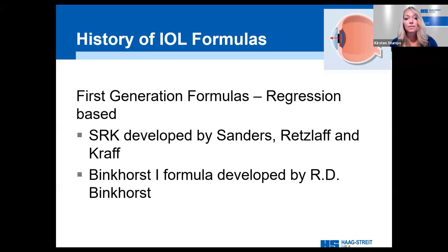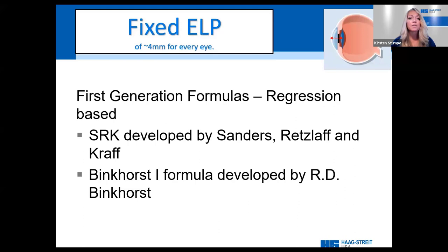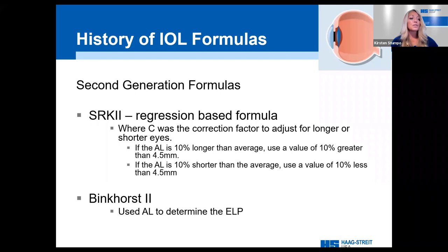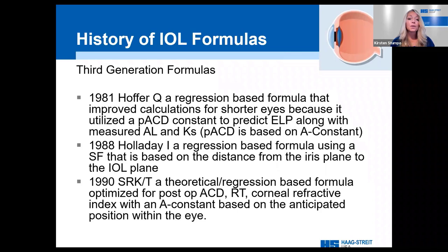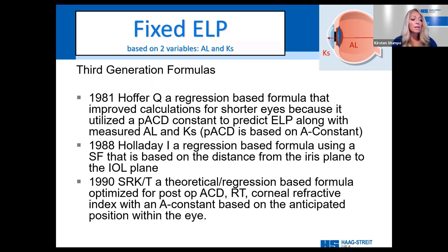These two heroes have changed the lives of millions. First generation formulas were simple linear formulas based on regression with a fixed effective lens position of about 4 millimeters for every eye. Second generation formulas were also based on regression with a fixed effective lens position based solely on axial length. In the 80s, our measurements got better and so did our formulas. Third generation formulas evolved starting with Hoffer Q, which improved calculations for shorter eyes, followed by Holliday 1 for average eyes, and the SRKT proving to do well with longer eyes. These formulas all utilized a fixed effective lens position based on two measurement variables: axial length and K's.